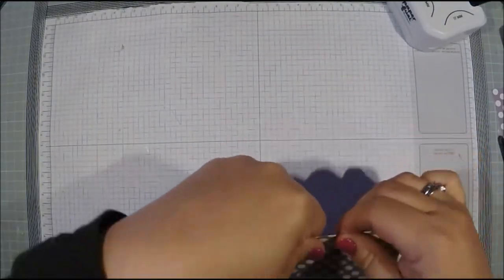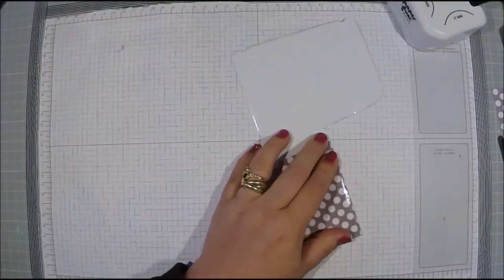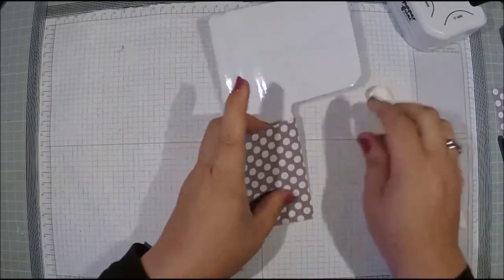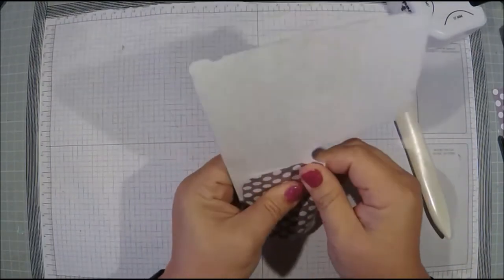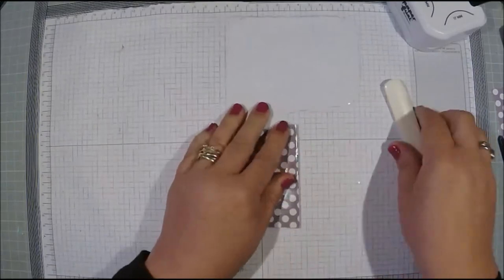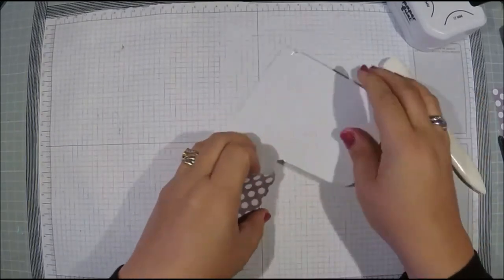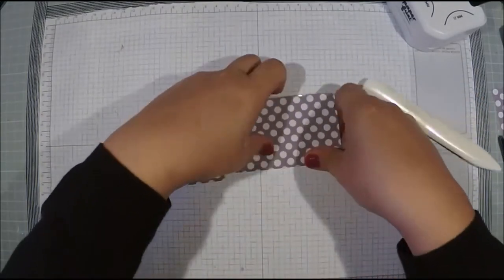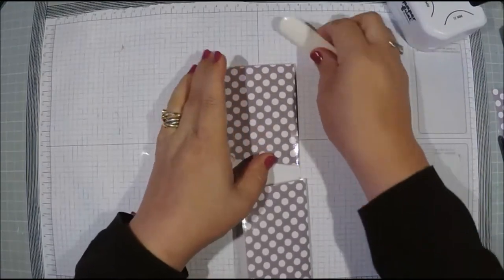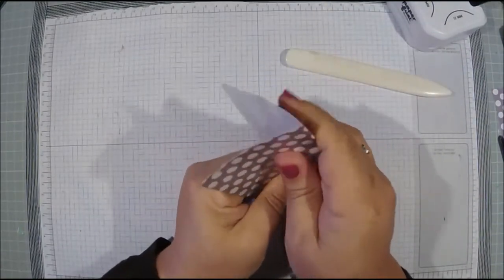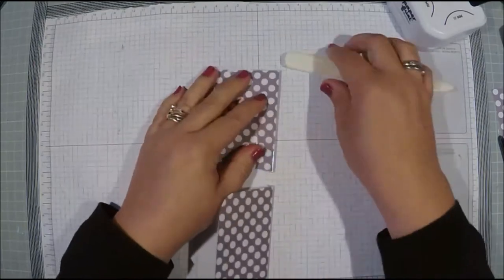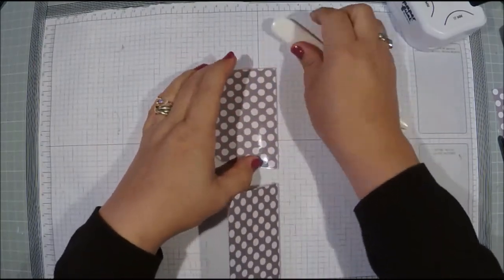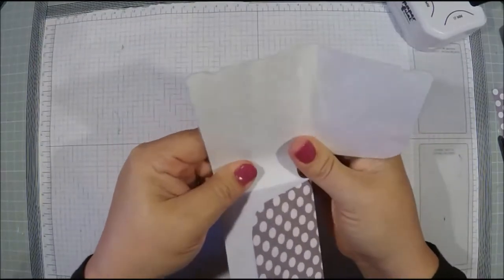Now go ahead and refold your fold lines. If you had thicker paper you would probably want to rescore them on the scoreboard before going in and folding them up. But with my thin paper I'm good like this.